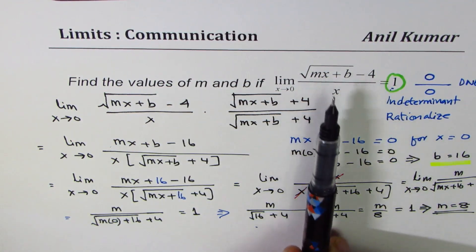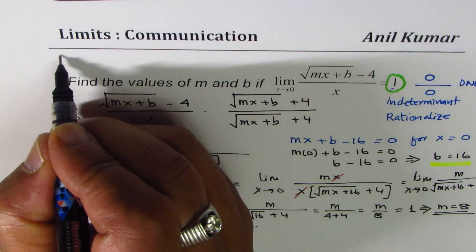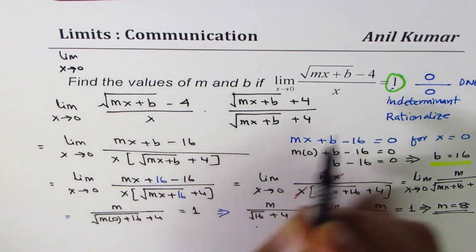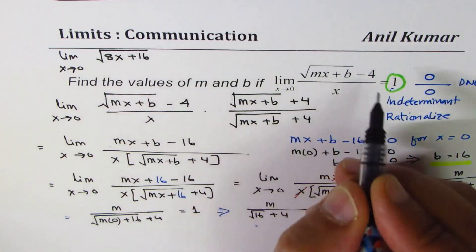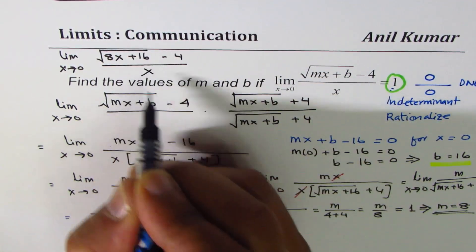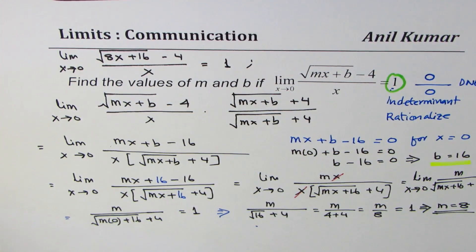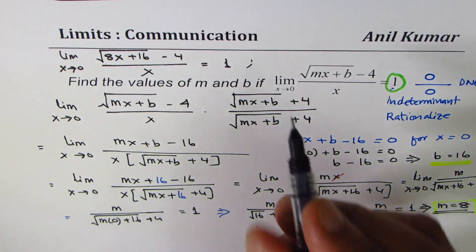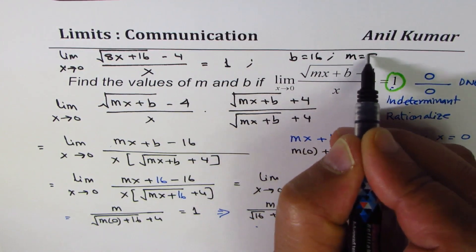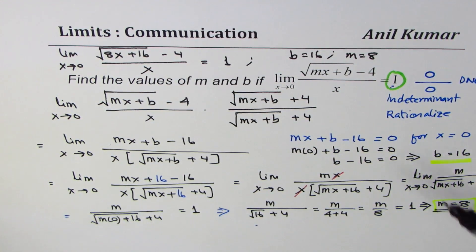So we get the value of m as 8. Only when m is 8 will the limit of this function be 1. The limit as x approaches 0 of (square root of 8x plus 16, minus 4) over x equals 1. Our final answer is b equals 16 and m equals 8. I hope this method helps you understand how to find these values.